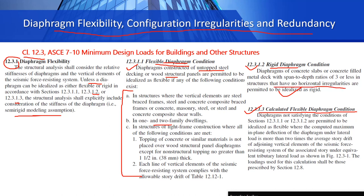Since ours is an RCC structure we don't have steel decking or wood panel diaphragms, so our diaphragm is not flexible. For rigid: diaphragms of concrete slabs or concrete-filled metal deck with span-to-depth ratios of three or less in structures with no horizontal irregularities are permitted to be idealized as rigid. We also have the calculated flexible diaphragm condition as a third option.